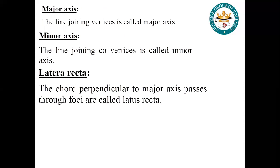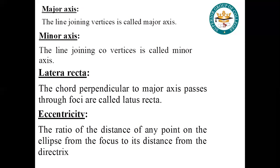The line joining the co-vertices is called the minor axis. Latus rectum: the chord perpendicular to the major axis passing through the foci is called latus rectum. Eccentricity: the ratio of the distance of any point on the ellipse from the focus to its distance from the directrix.